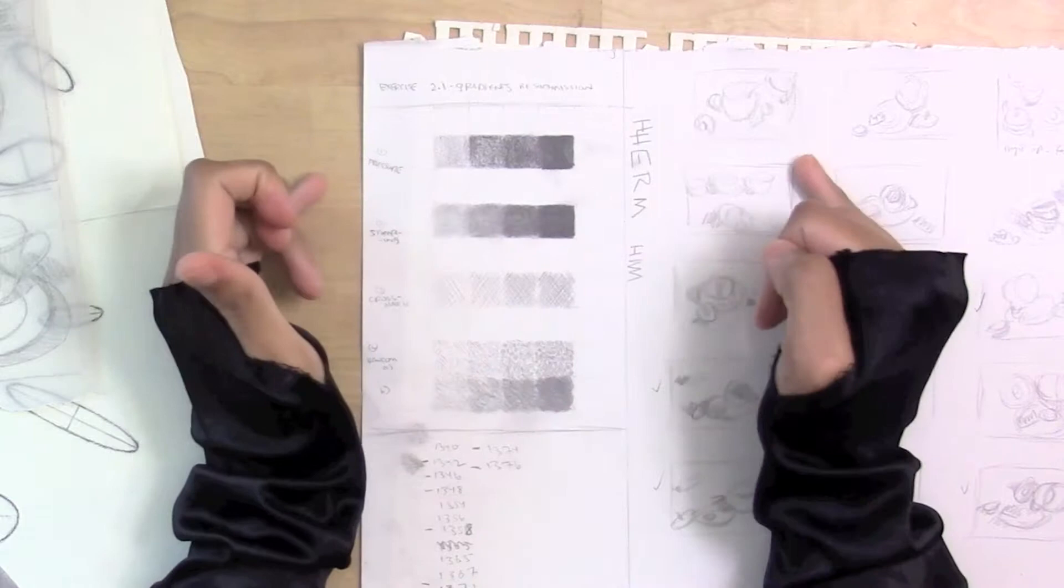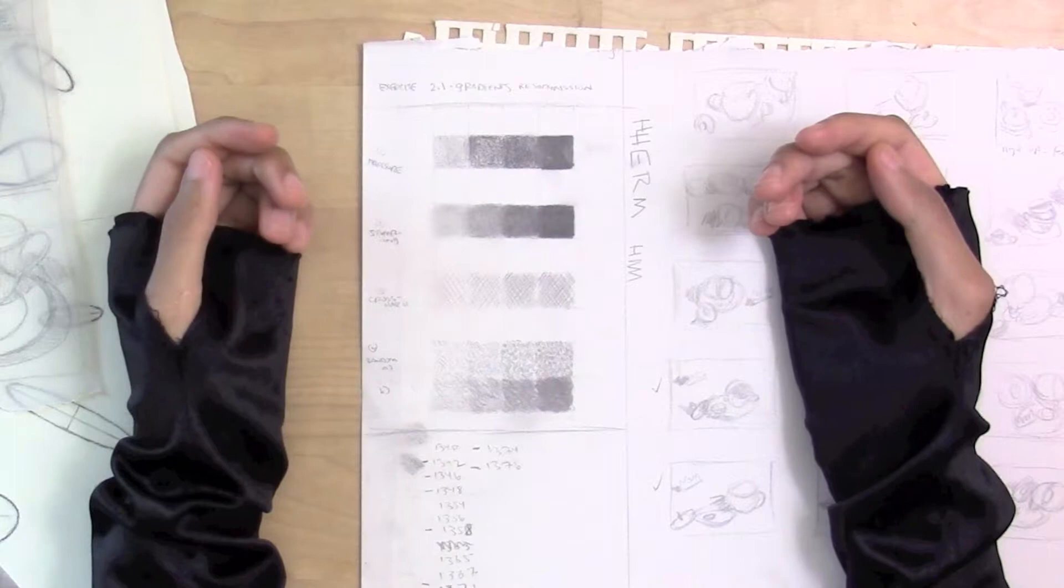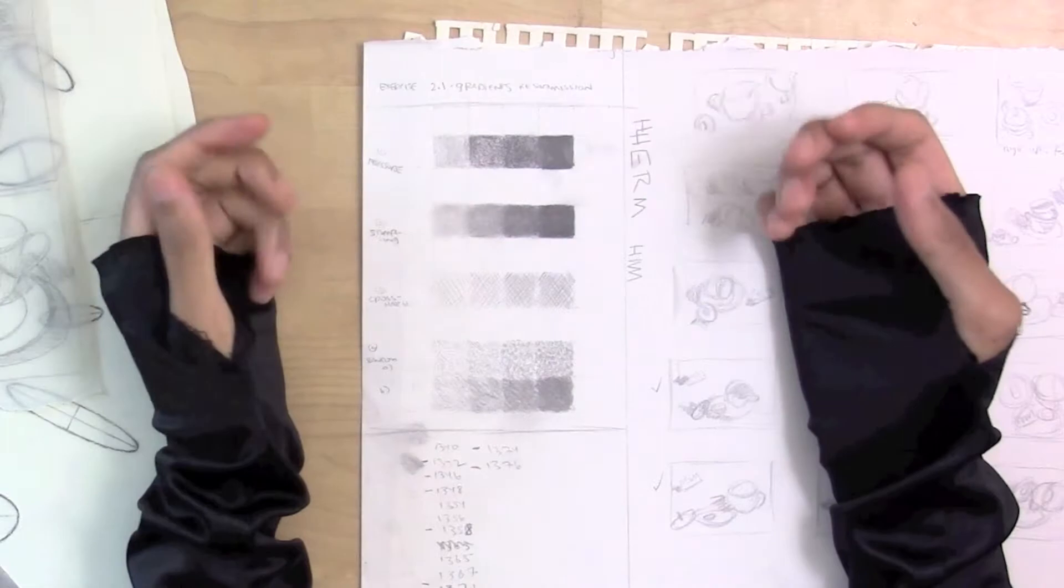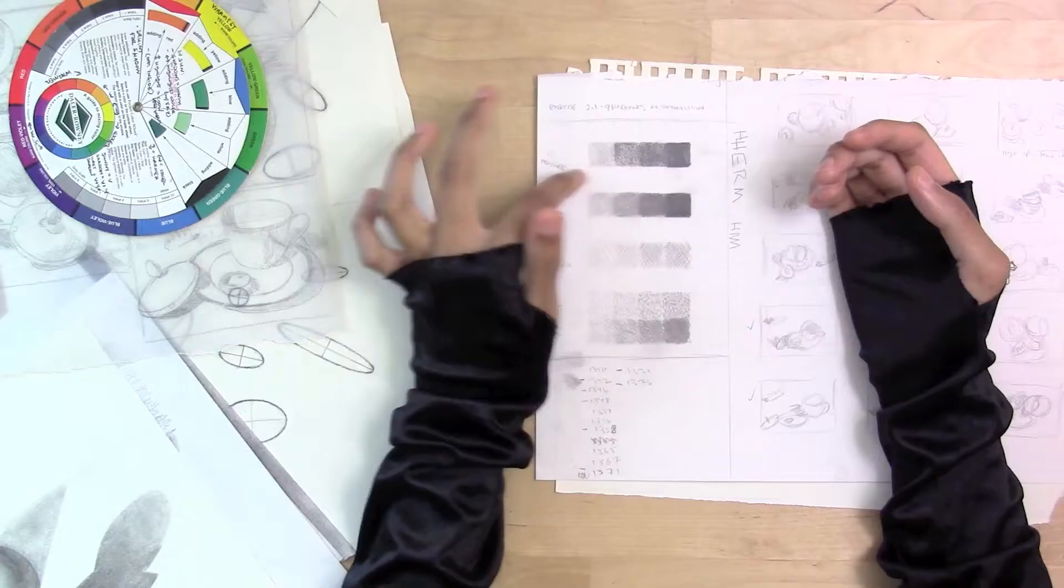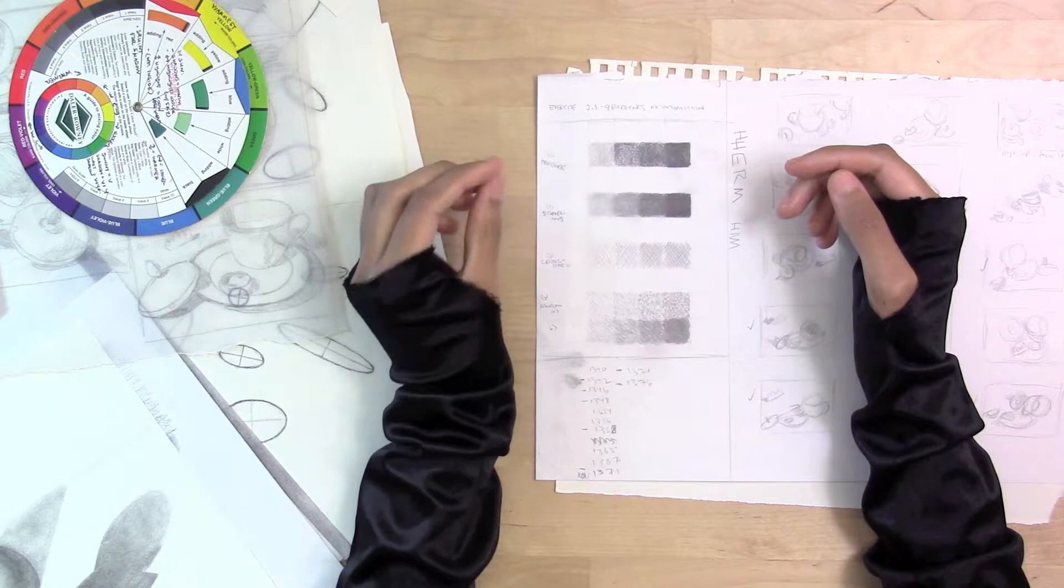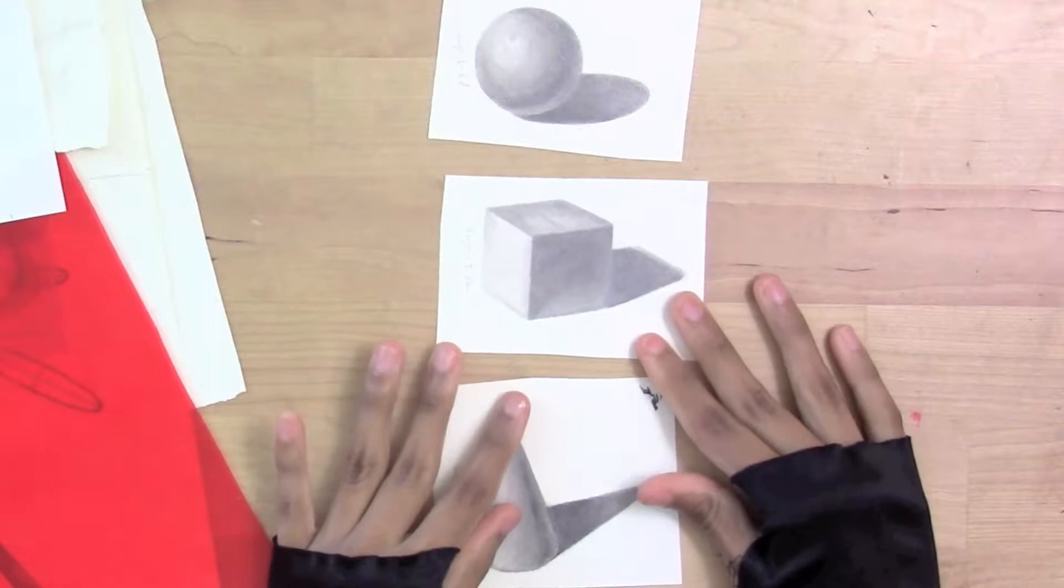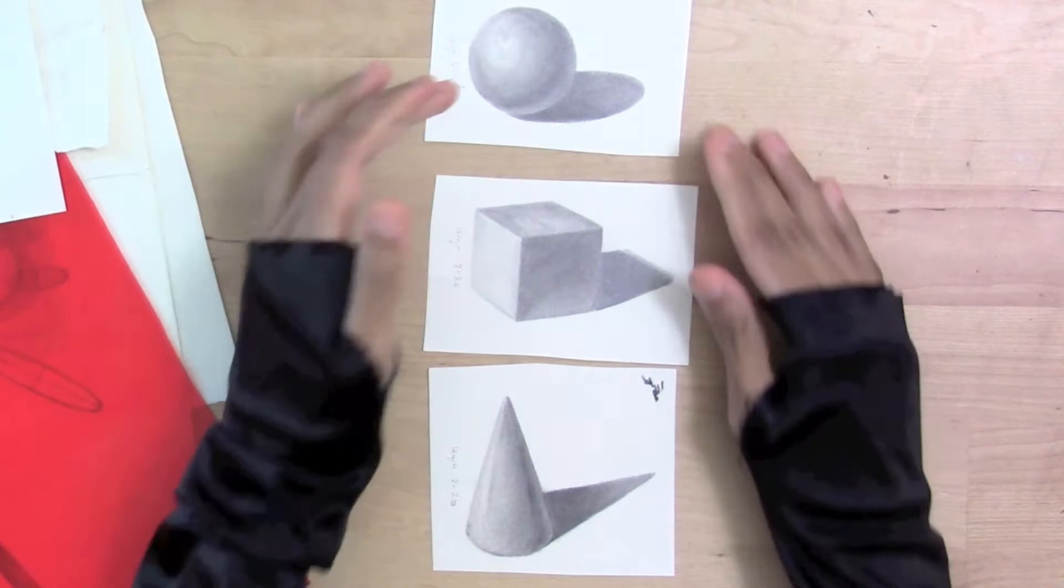I've found that even though there are ten values usually on a value scale, and also our eyes can see tens of thousands or hundreds of thousands of values, you don't want to get bogged down in trying to recreate all of these values. Choose the strongest values, you'll find that your illustration or your painting actually becomes stronger because it helps you read form. So one of the reasons these shapes are successful as a sphere, a cube, and a cone is because they are showing a full value range from lightest light to darkest dark.